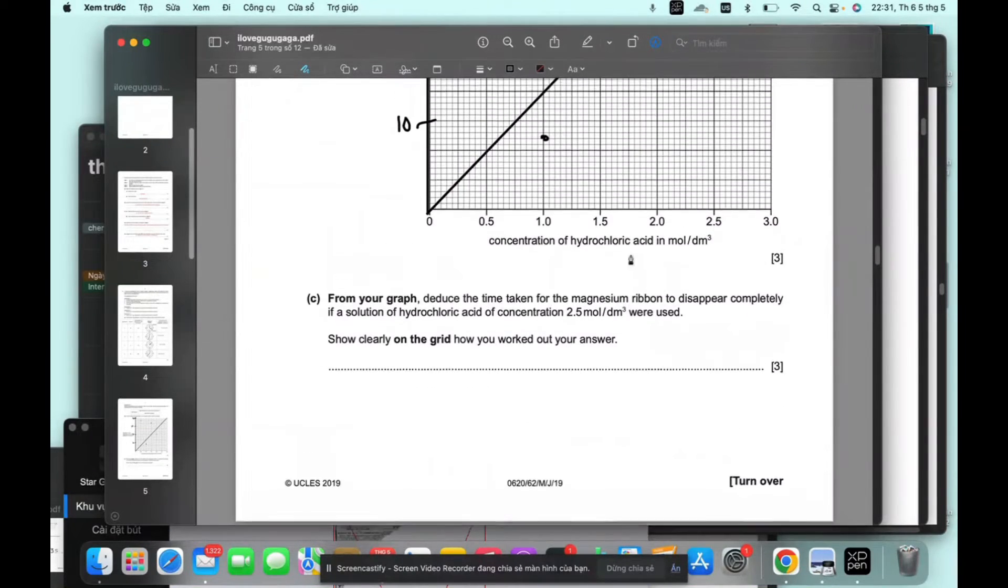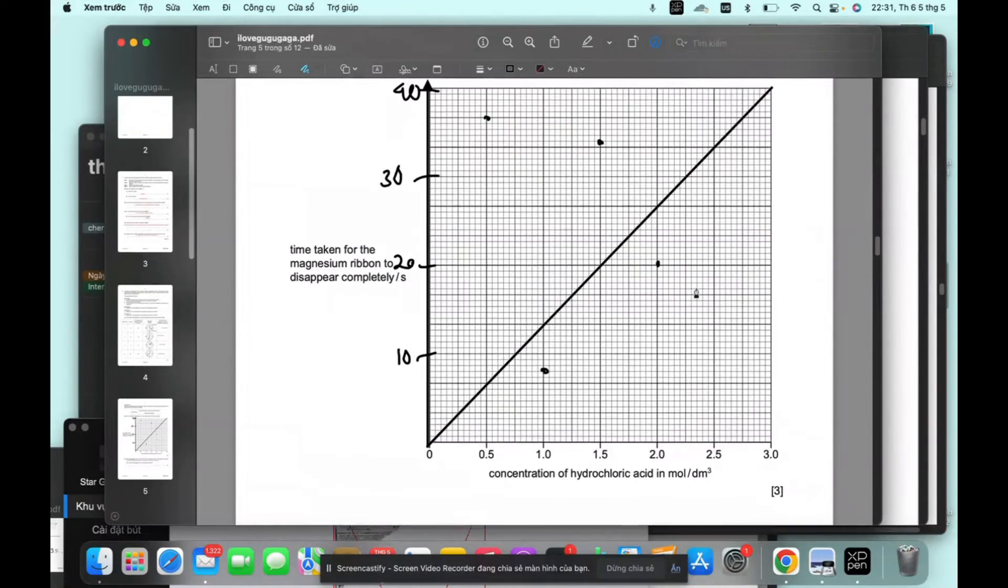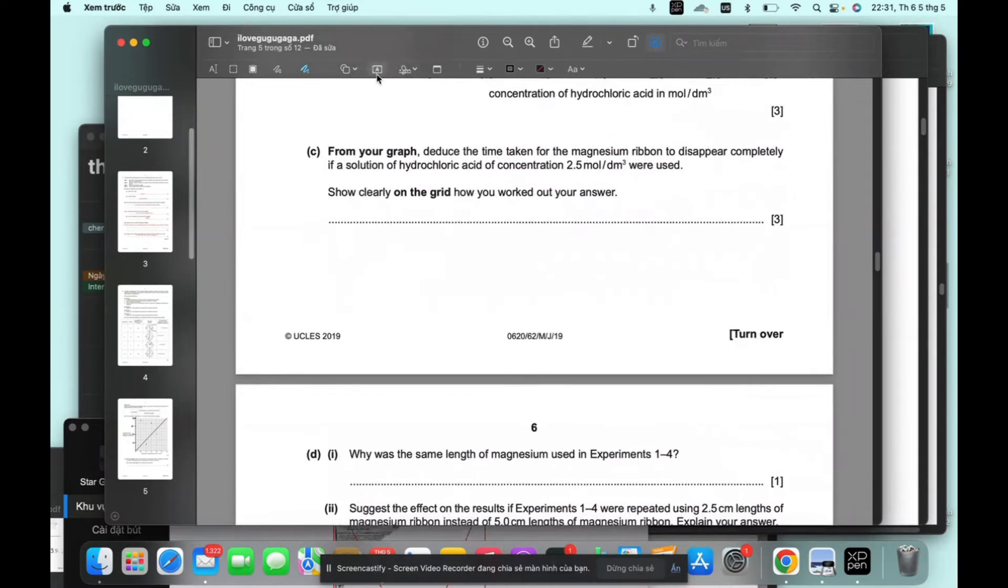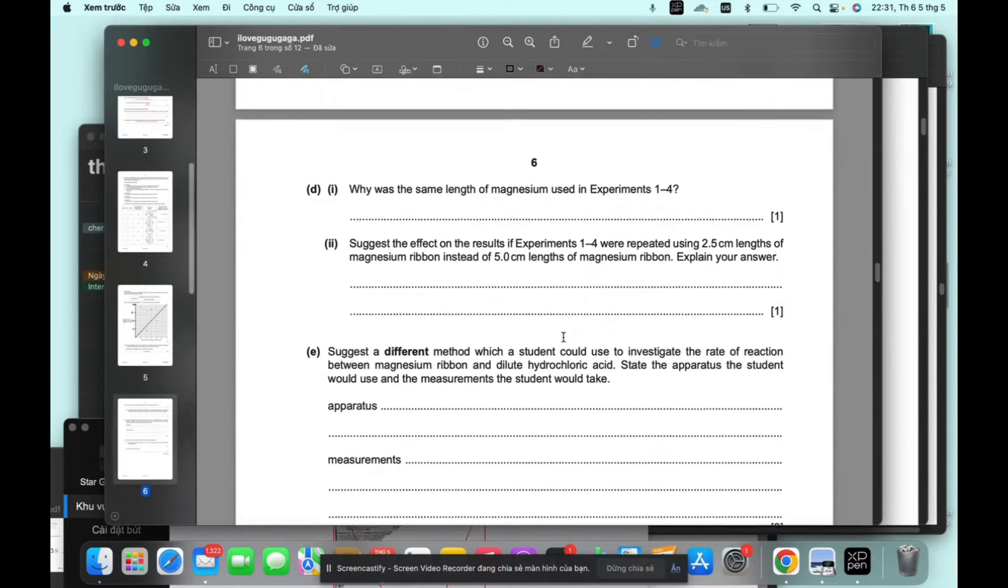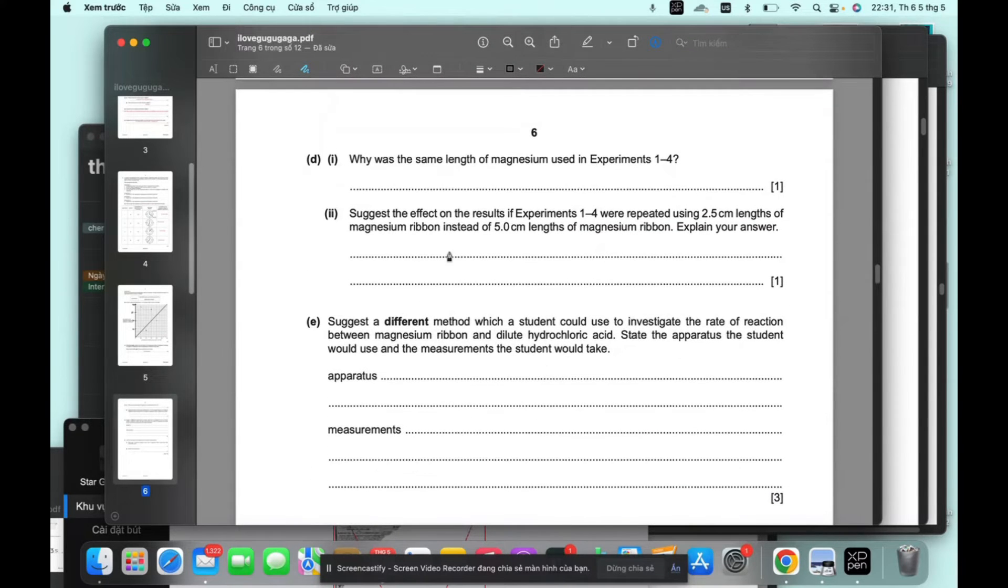For your graph completely, if 0, 1, 2.5. So it's about 33 seconds. So I'm gonna put 33 seconds here. Based on the graph that I drew. Use the graph that you draw. And you deduce the number.